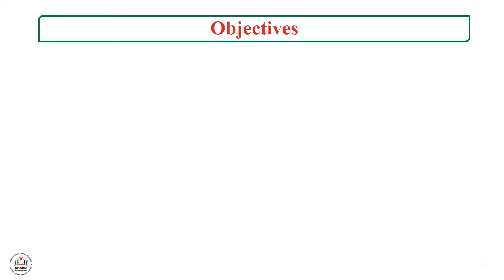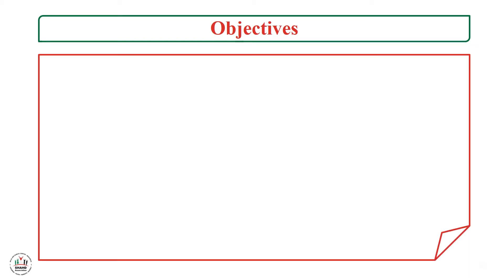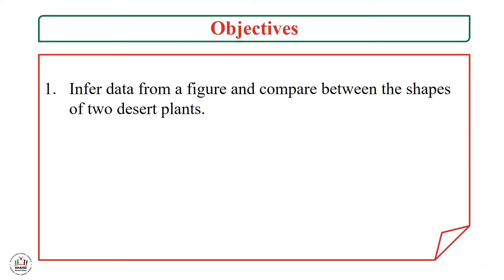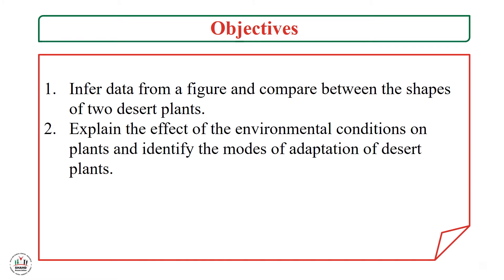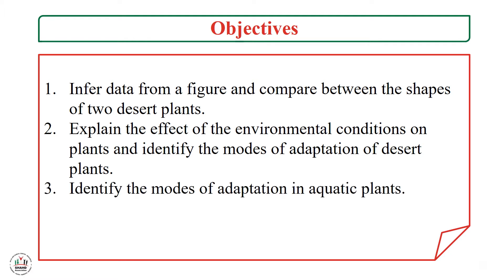Our objectives for this lesson: the first is to infer data from a figure and compare between the shapes of two desert plants. The second is to explain the effect of environmental conditions on plants and identify the modes of adaptation of desert plants. The last one is to identify the modes of adaptation in aquatic plants.